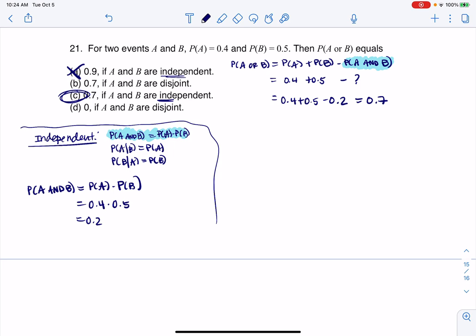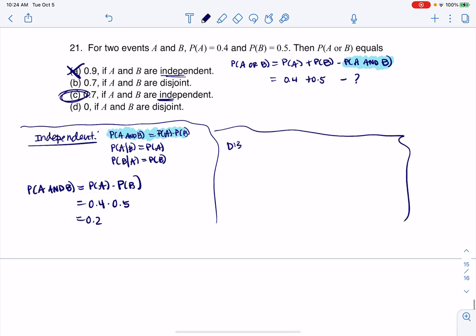Now just to play this out, I want to show you what this would have looked like if they were disjoint, because you see the other option, right, which is saying disjoint. So let's try this if they were disjoint. So if two events are disjoint or mutually exclusive, then you know the probability of A and B equals zero.